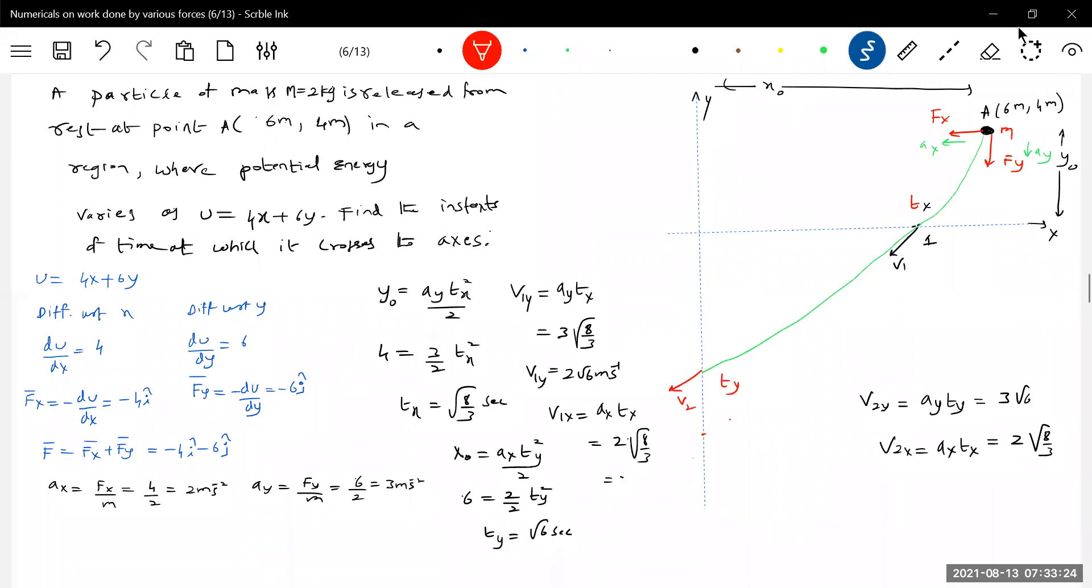When it crosses, we can get the coordinates by applying kinematics. If they give potential U, you differentiate to get the force, from force get acceleration, then use kinematics. But remember: F = -dU/dx because it's a conservative force. Whenever we define potential, it's for conservative force only.